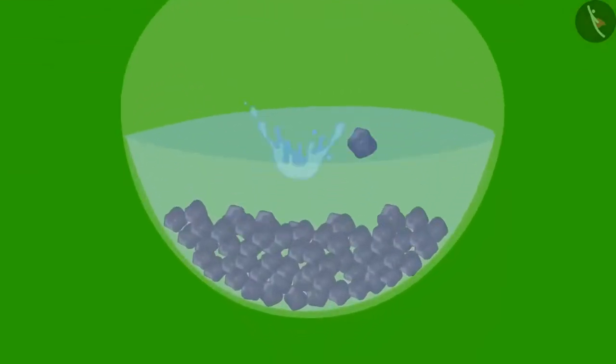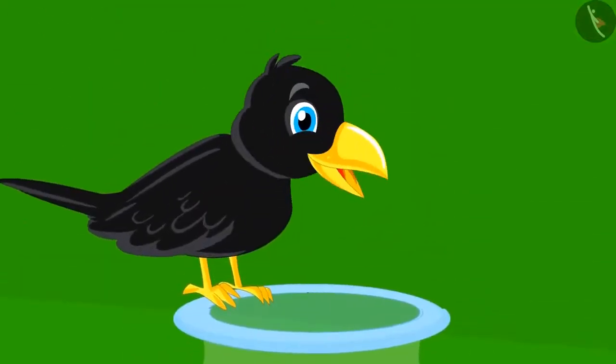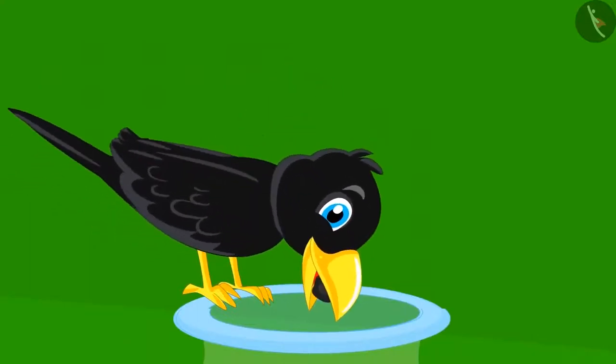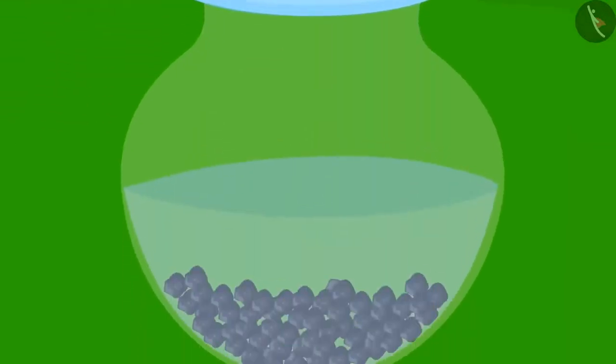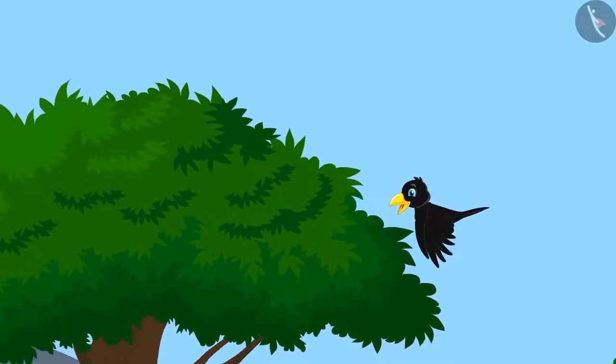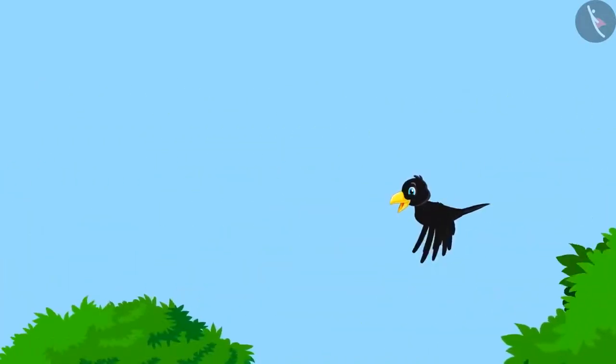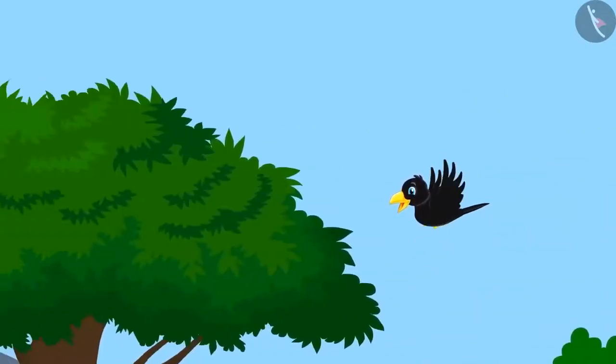The crow put these 36 stones in the pitcher and he was happy to see the water level rising up. He immediately inserted his beak into the pitcher and tried to drink the water. But the water was still very low. The crow left again in search of more stones.